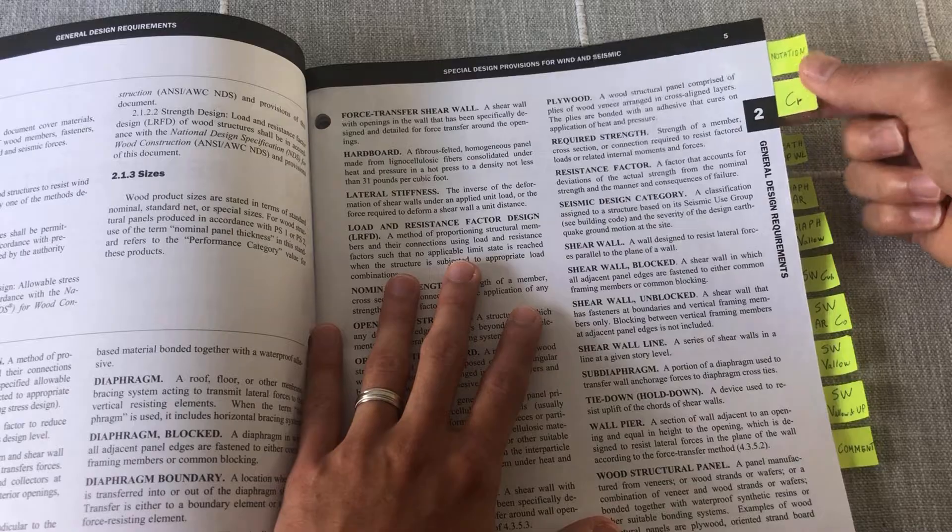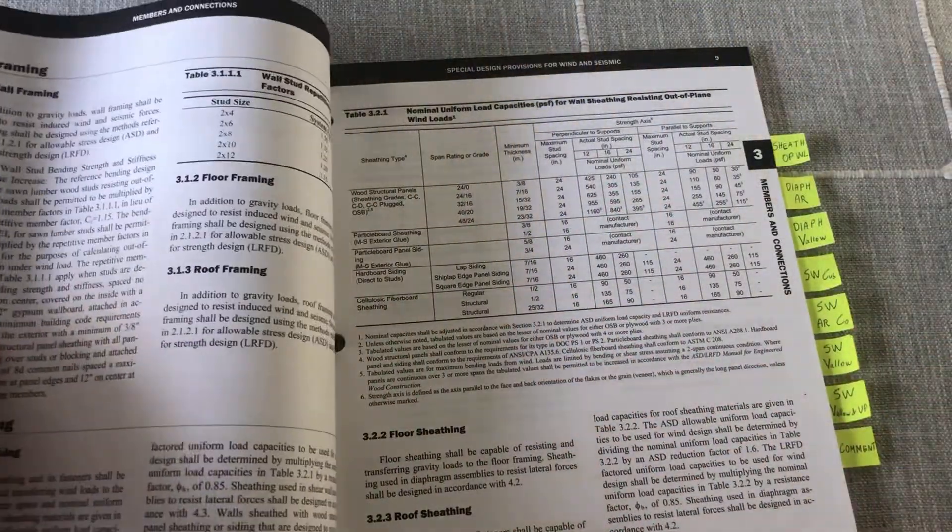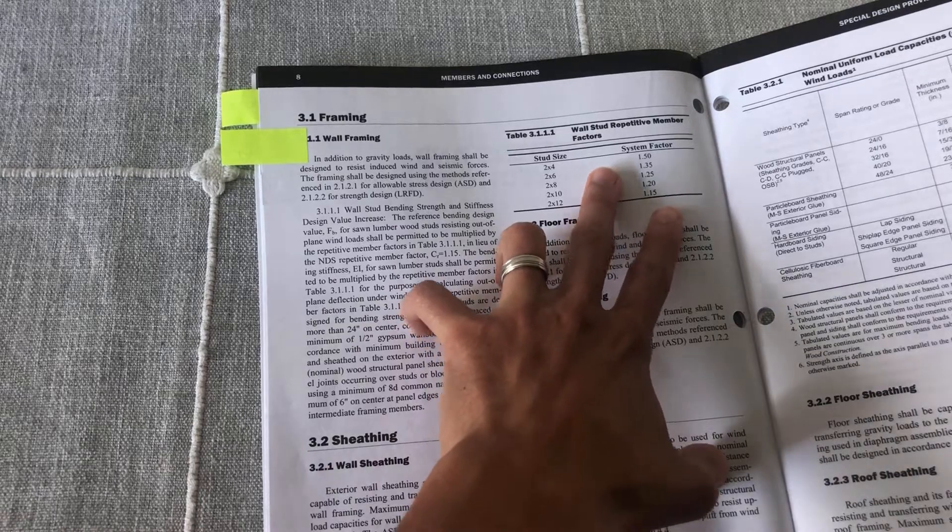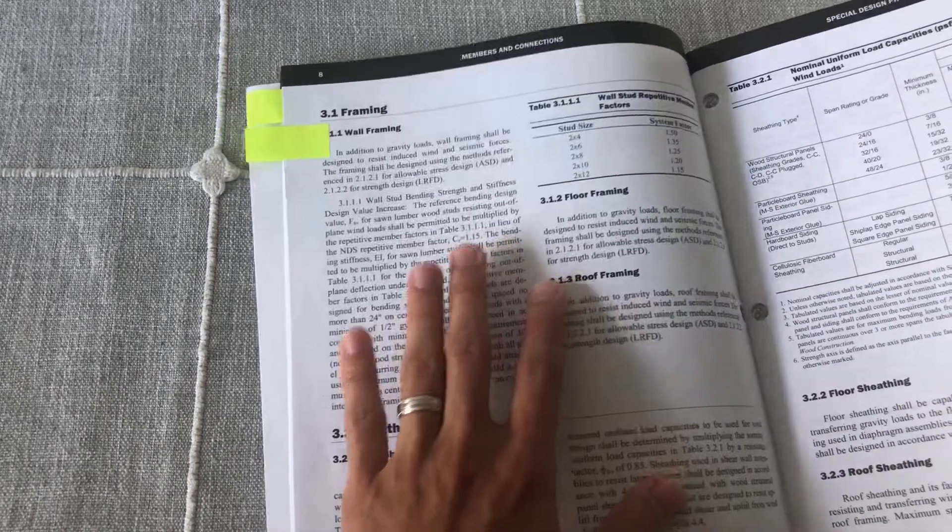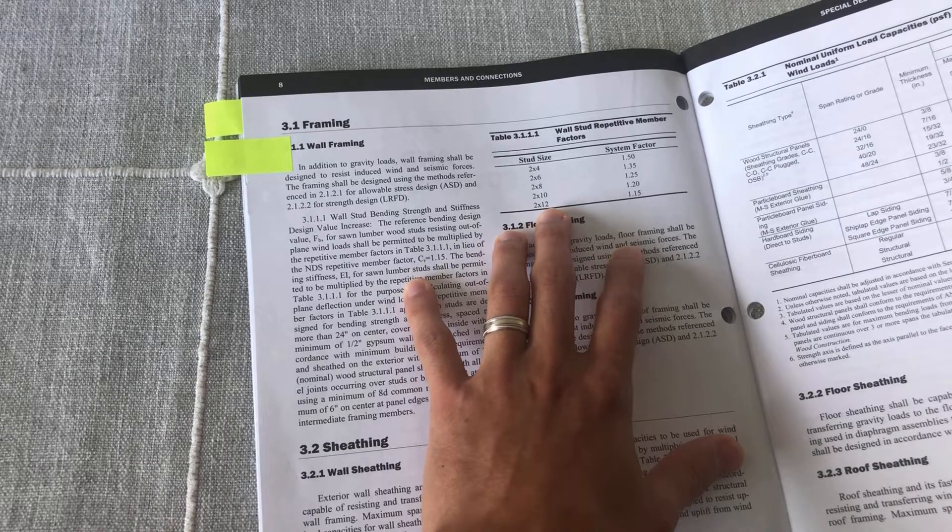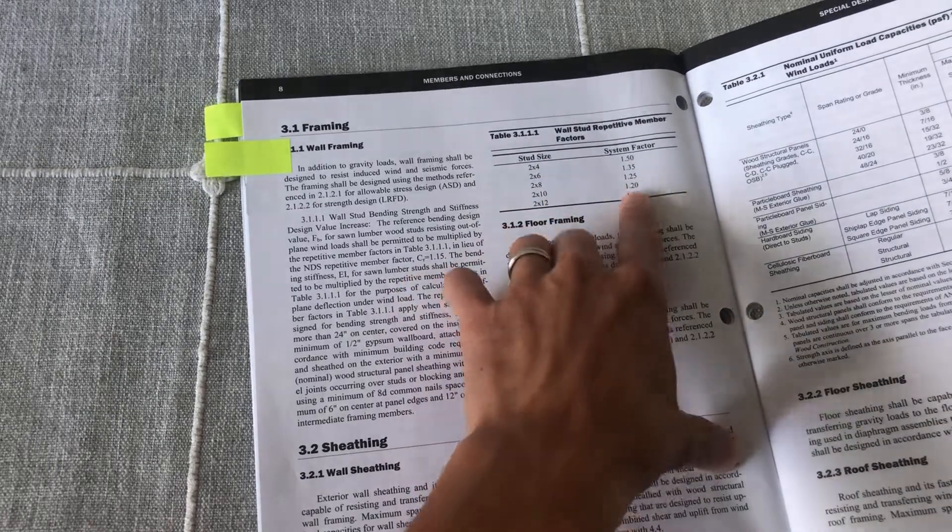The second one is one factor that is referenced in this manual, which is the repetitive member factor. This one is specific to SDPWS. You can see for different types here of stud sizes and different factors.